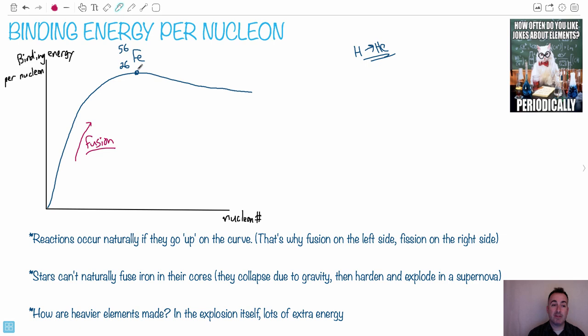At this point, you notice, even if it tries to fuse iron into the next thing, it doesn't go up in the curve. So it doesn't do it naturally. You have to force it to happen. So like I said, here's the problem. Stars can't naturally fuse iron in their cores. So we'll talk about that in a second here.